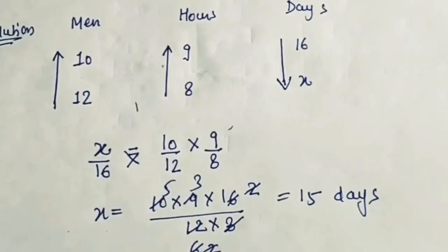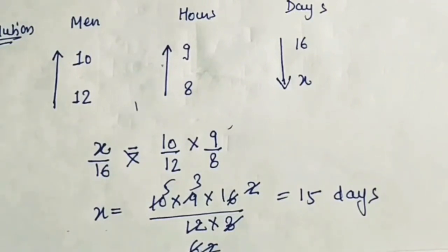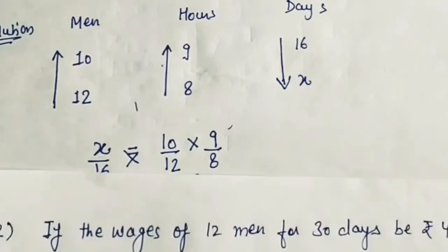So the answer is: 12 men working 8 hours complete the work in 15 days. This is the compound variation question — a very easy and short method to solve these kinds of questions. If you have any queries, you can put them in the comment box. That's all for today, thank you so much.